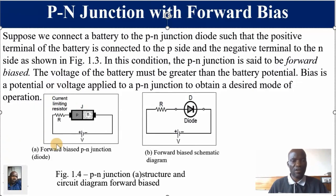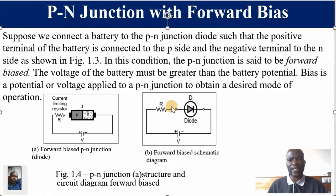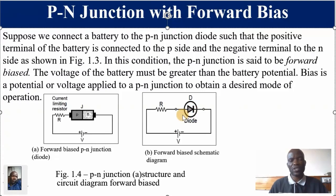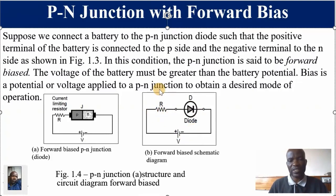In electronic circuits we use schematic diagrams to represent the PN junction structure. This arrow is the P-type (anode) and this band is the N-type (cathode). The anode is positive, hence connected to the positive terminal of the battery; the cathode is negative, hence connected to the negative terminal. R is the current-limiting resistor and D stands for diode. This schematic diagram is a representation of the forward-biased circuit connection.